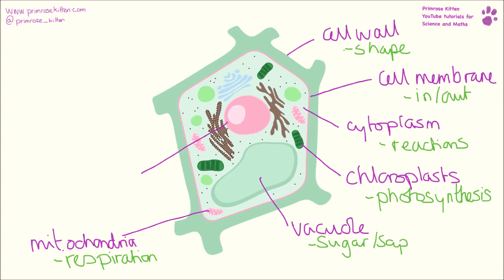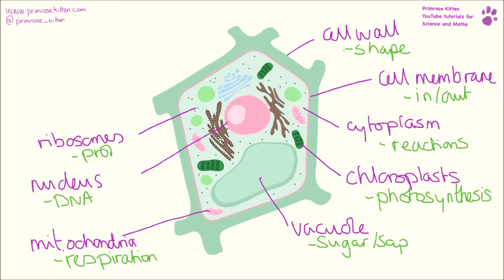And then here we have our nucleus. This is where all the DNA is, where all the chromosomes are. That's the bit responsible for making sure the cell does what it's supposed to do. And then these little black bits here are the ribosomes. These are responsible for protein production.